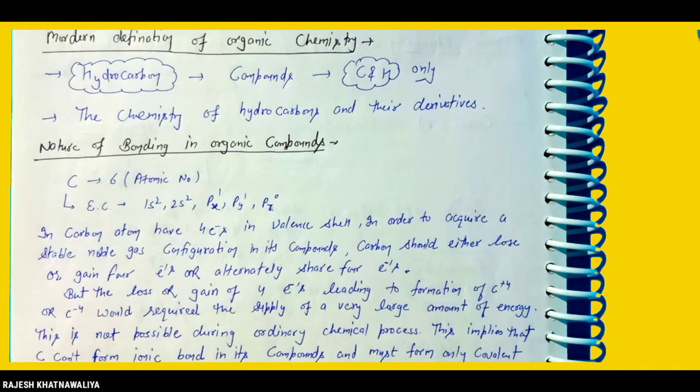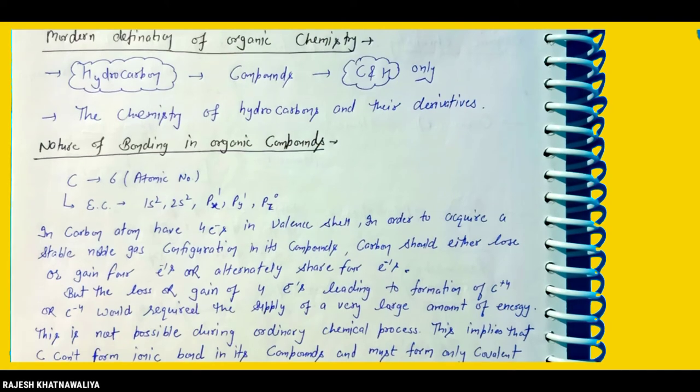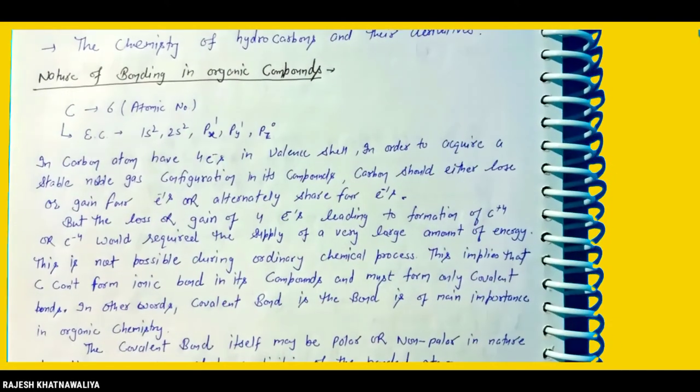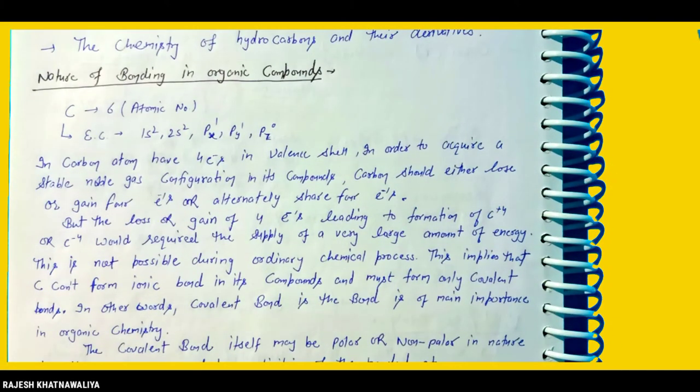However, gaining or losing 4 electrons requires considerable energy, which is not favorable in ordinary chemical reactions. Therefore, carbon achieves stability by sharing these 4 electrons with other elements to form compounds.